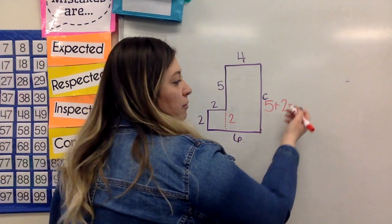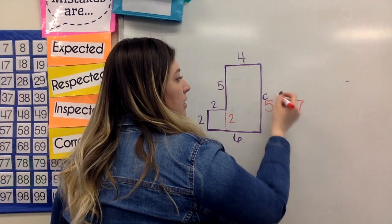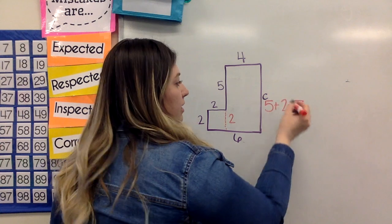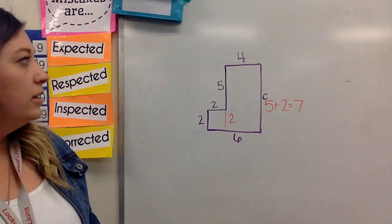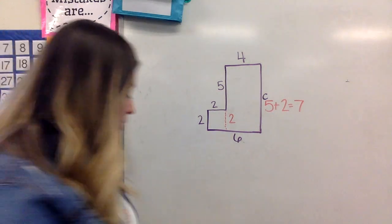And I know that five plus two equals seven. So I know that C, missing side length C, is actually seven. So now I can go around my shape and find my perimeter, just like I have on my others.